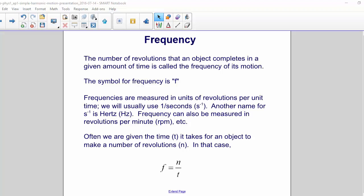The number of revolutions that an object completes in a given amount of time is called the frequency of its motion. The symbol for frequency is lowercase f.